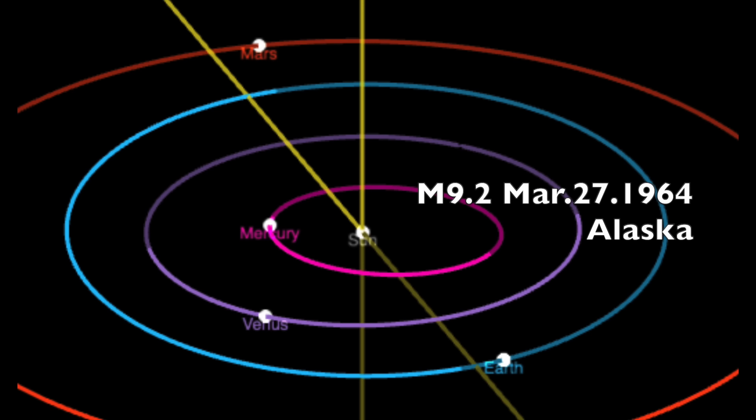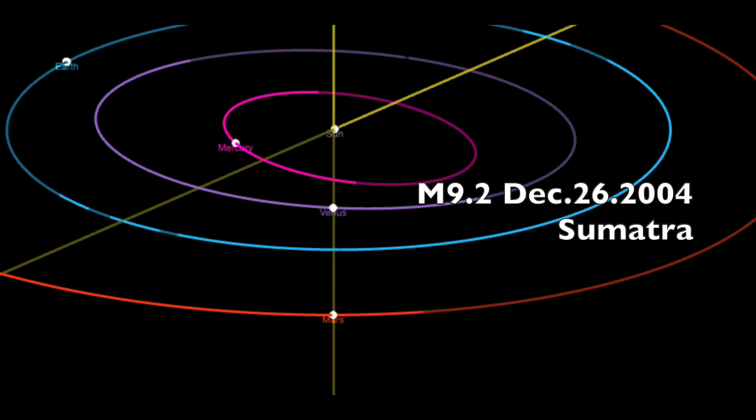Looking back in time, triple lineup of planets on the day of the 9.2 in Alaska in 1964. The 2004 Christmas tsunami in Sumatra. Sun and Earth both activated during that alignment.